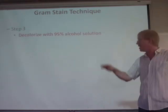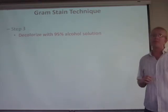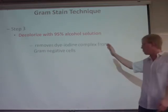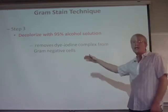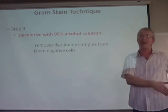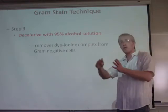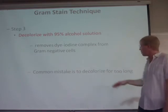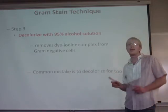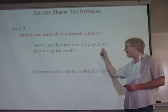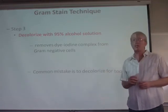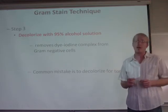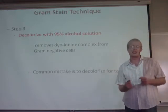After rinsing again with distilled water, we decolorize with a 95% alcohol solution. Decolorizing removes the dye-iodine complex from the gram negative cell walls, while it is retained by the gram positive cell walls. One important caution: we don't want to decolorize for too long. If the alcohol solution is left on the specimen too long, it will decolorize gram positive bacteria as well, or at least make them appear pinkish.